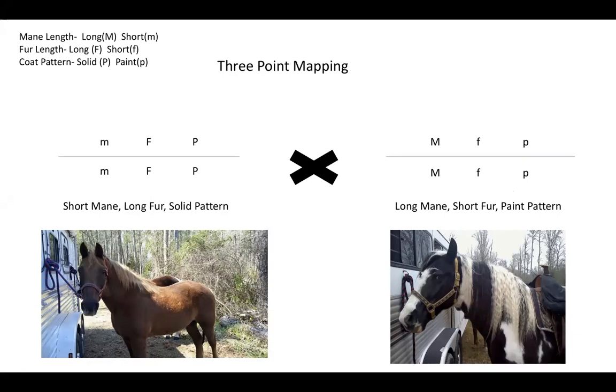Our fur length, long will be capital F, short will be lowercase F. Coat pattern, capital P will be solid and lowercase P will be paint.